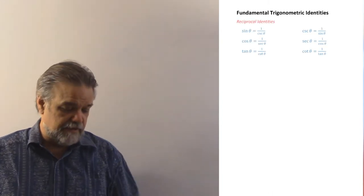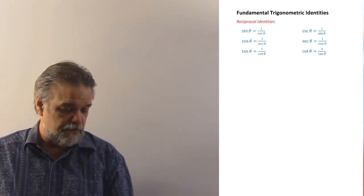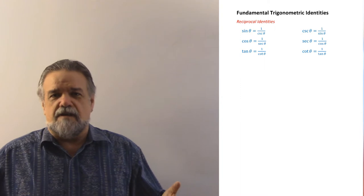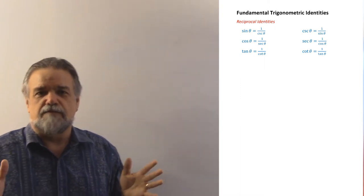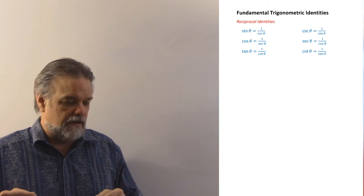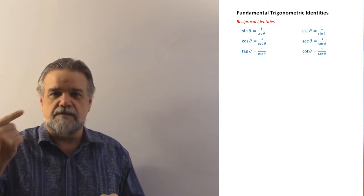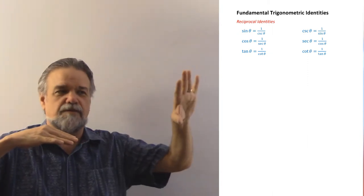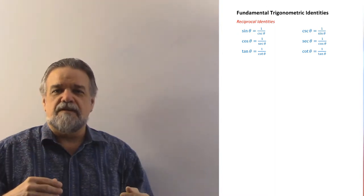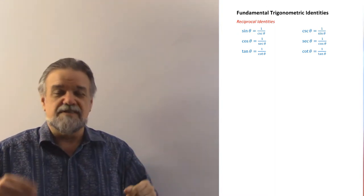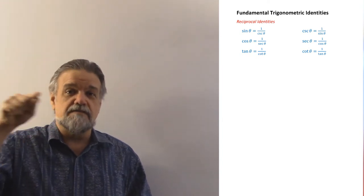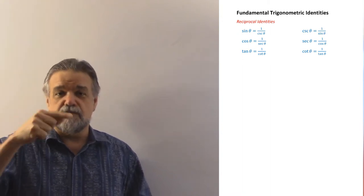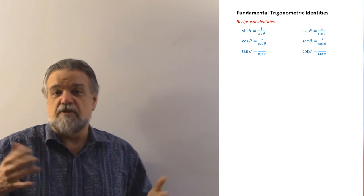The first fundamental trigonometric identities are the reciprocal identities. You've known these since I first taught you about cosecants, secants, and cotangents. Sines, cosines, and tangents are on the left, and everything on the right is just the reciprocal of what's on the left. One thing to keep in mind: if cosecant is the reciprocal of sine, then sine is also the reciprocal of cosecant — meaning if cosecant is one over sine, then sine is also one over cosecant.